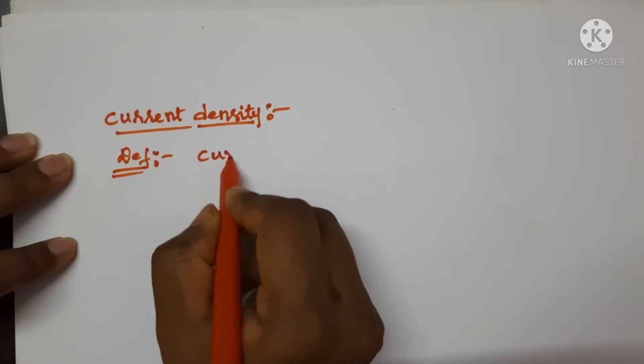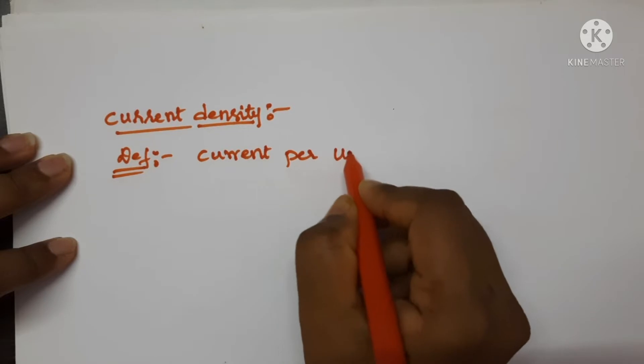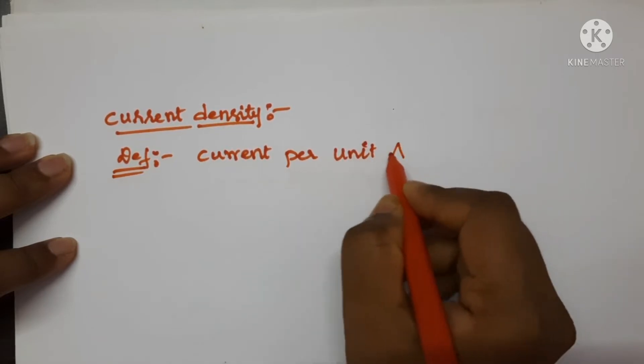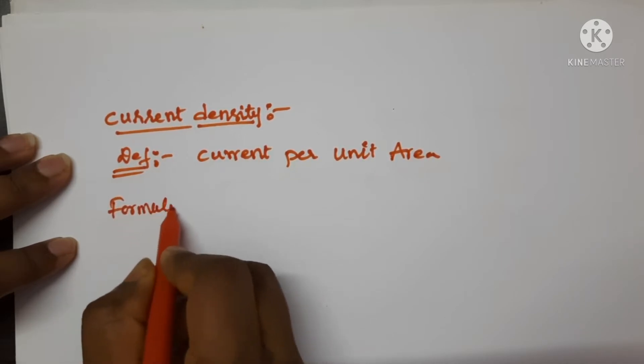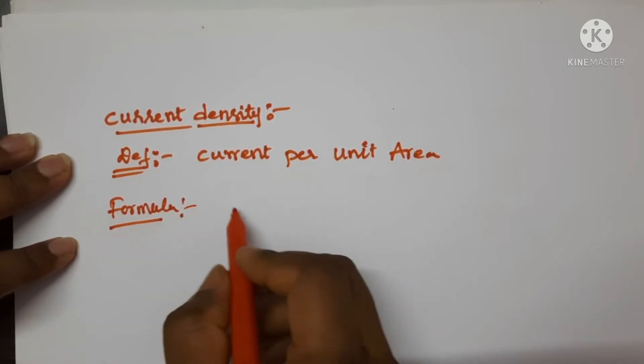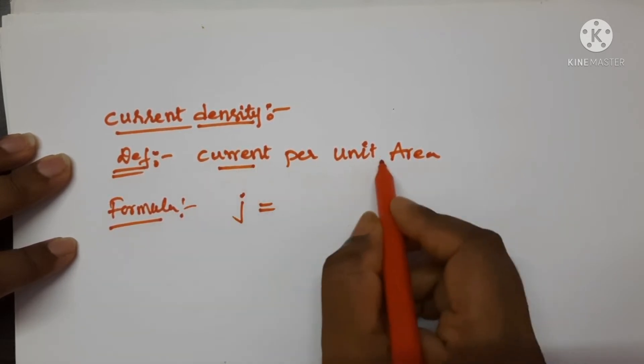It is defined as current per unit area. Let us see the formula. Current density is denoted with letter J, which is equal to current per unit area.